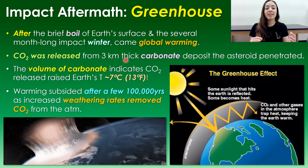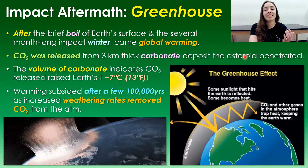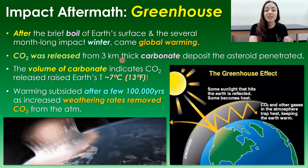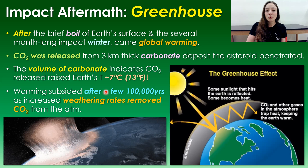But after the brief boil and the several-month-long impact winter came global warming. CO2 was released in major quantities from the three-kilometer-thick carbonate deposit that the asteroid penetrated. The volume of carbonate penetrated gives us estimates of CO2 released that would have raised Earth's temperature by 7 degrees Celsius. However, warming subsided after a few hundred thousand years as increased weathering rates removed CO2 from the atmosphere, bringing it back to near pre-impact CO2 levels and temperatures.